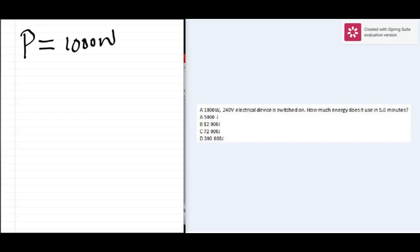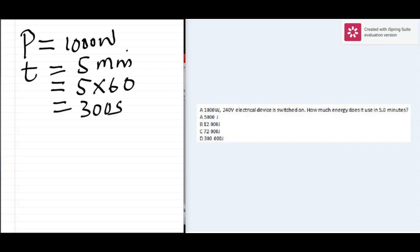We also have the time, which is five minutes. We have to convert this to seconds. Five times sixty gives us 300 seconds. So to find the electrical energy...